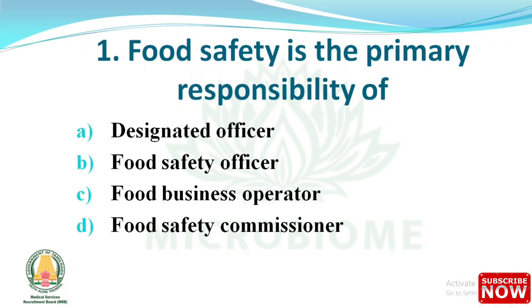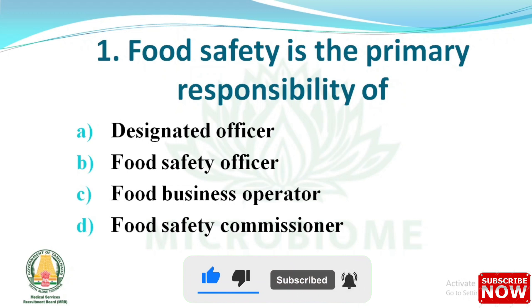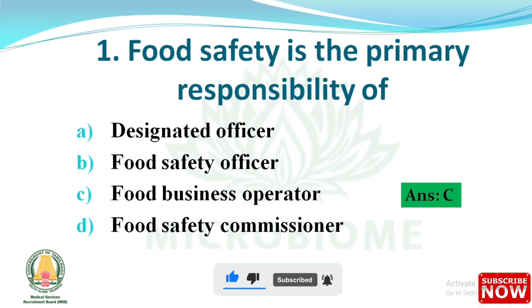The first question is: food safety is the primary responsibility of whom? Options are: designated officer, food safety officer, food business operator, food safety commissioner. The right answer is option C: food business operator.